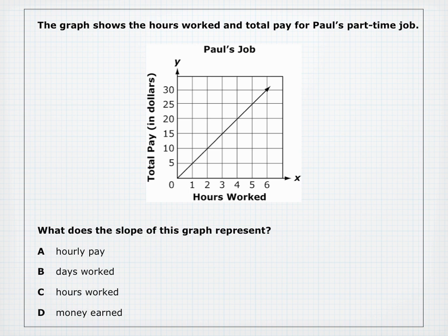A graph shows hours worked on the X-axis and total pay in dollars on the Y-axis for Paul's part-time job. What does the slope represent? Days worked and money earned alone don't describe slope. Hours worked is just the X-axis. The slope — change in pay over change in hours — represents hourly pay, answer A.